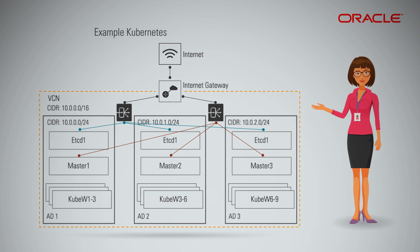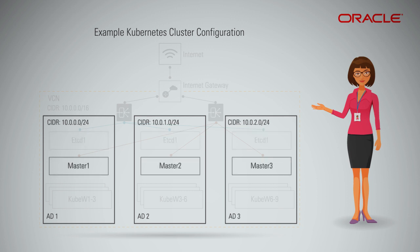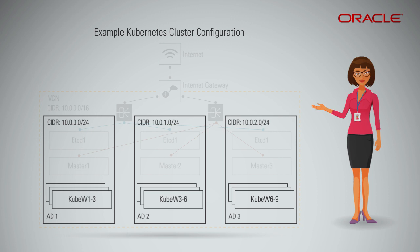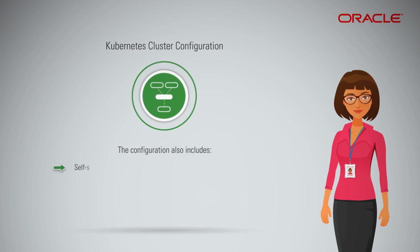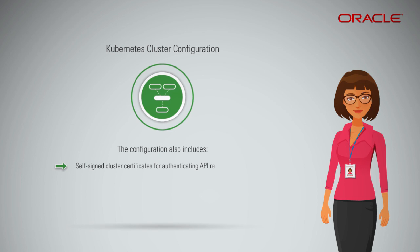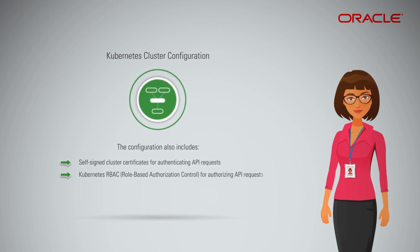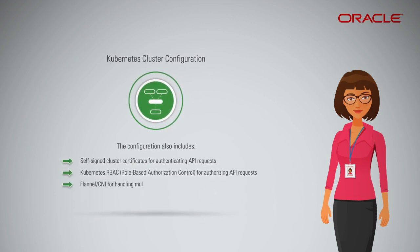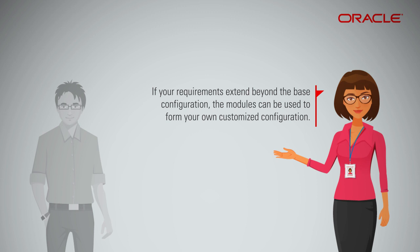This example Kubernetes cluster configuration includes 3 back-end etcd instances (one for each availability domain), 3 back-end k8s master instances (one for each availability domain), and 9 k8s worker instances (3 for each availability domain). The configuration also includes self-signed cluster certificates for authenticating API requests, Kubernetes RBAC (role-based authorization control) for authorizing API requests, and Flannel or CNI for handling multi-host container networking.